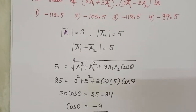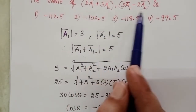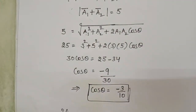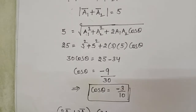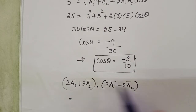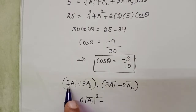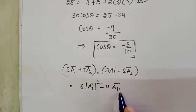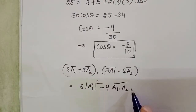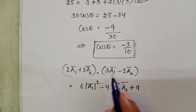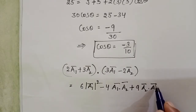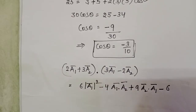Now we use this to find the value of (2a1 bar plus 3a2 bar) dot (3a1 bar minus 2a2 bar). Expanding: 6 a1 dot a1 minus 4 a1 dot a2 plus 9 a2 dot a1 minus 6 a2 dot a2.